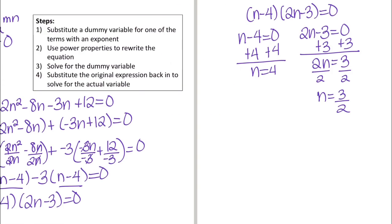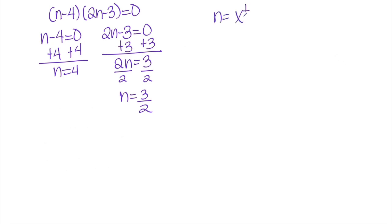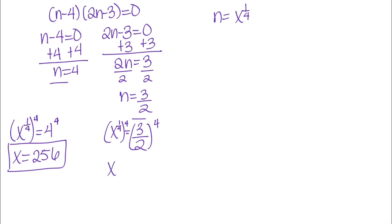I've solved for n, but I want the value of x. Since n equals x to the 1 fourth, I substitute back: x to the 1 fourth equals 4, and x to the 1 fourth equals 3 over 2. Raising both sides to the 4th power — the reciprocal of 1 over 4 — for the first equation gives x equals 4 to the 4th, which is 256. For the second, x equals 3 to the 4th over 2 to the 4th, which is 81 over 16. So my two solutions are x equals 256 and x equals 81 over 16.